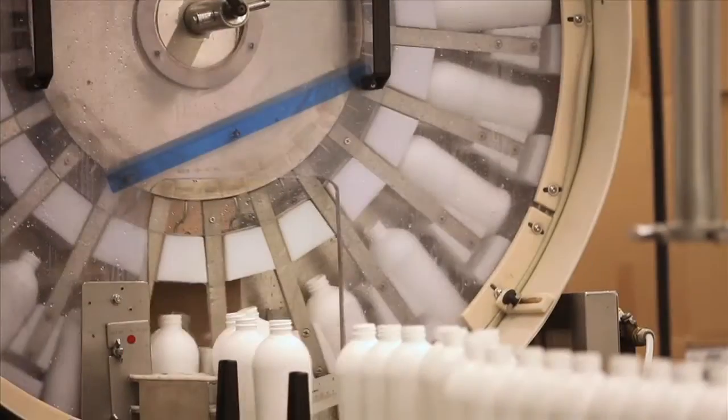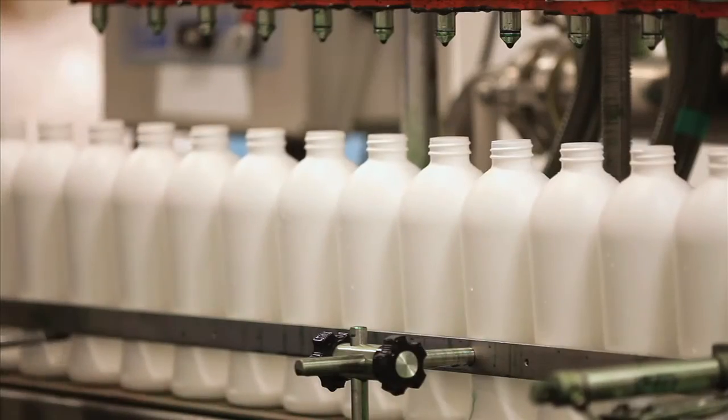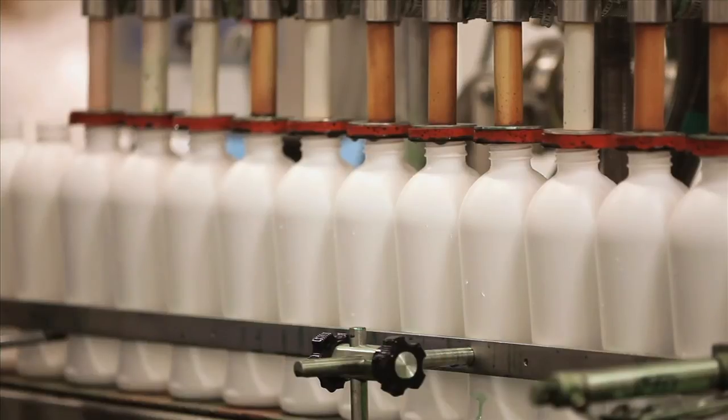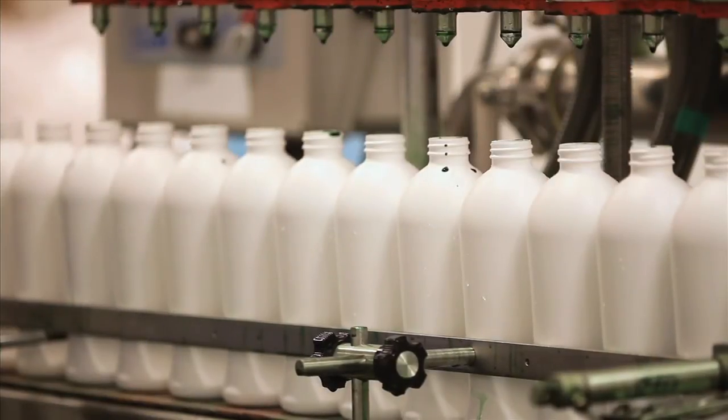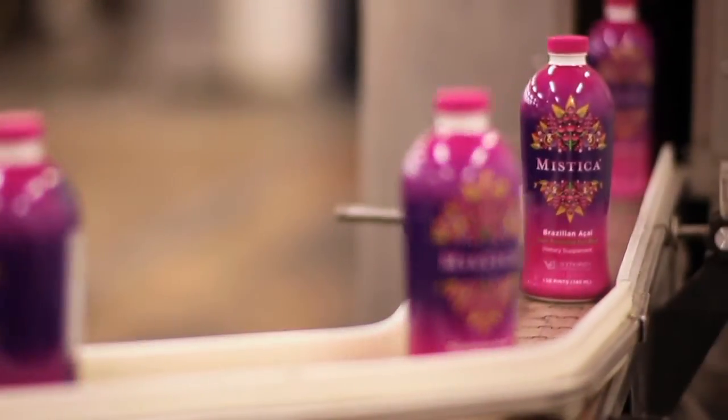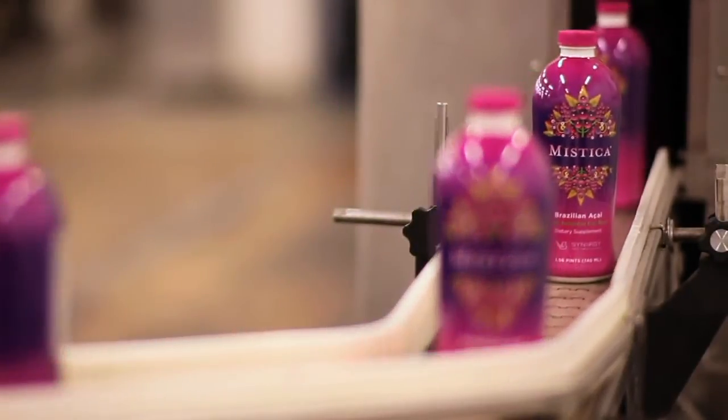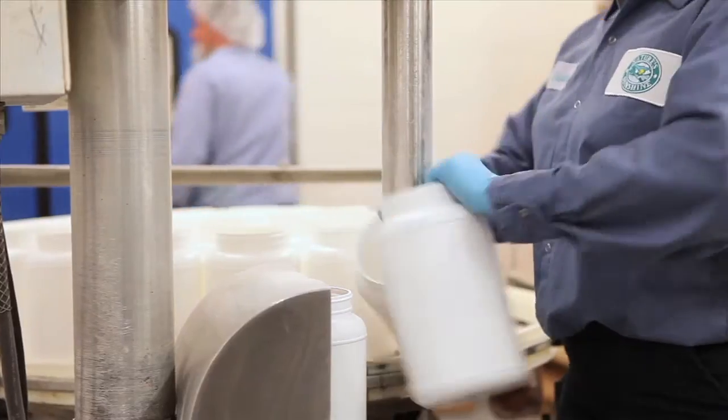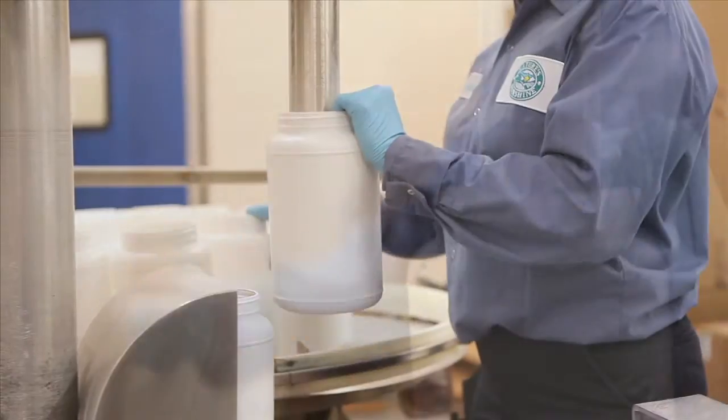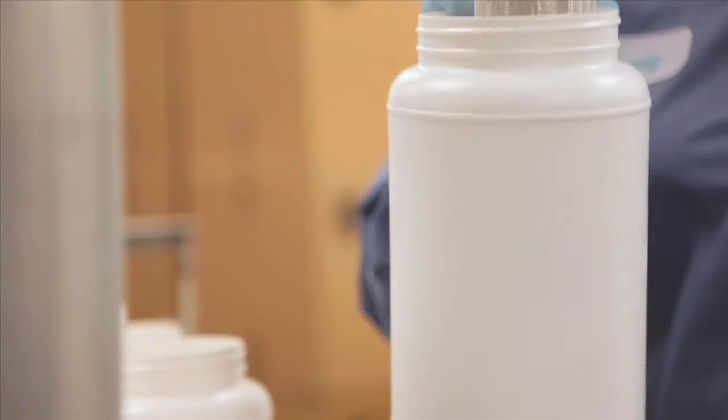The liquid line is mixed in 750-gallon mixing tanks. The water used is purified on-site by reverse osmosis technology. Fitted with metal detectors as an extra safety precaution, each one of our four packaging lines can produce tens of thousands of bottles per day.